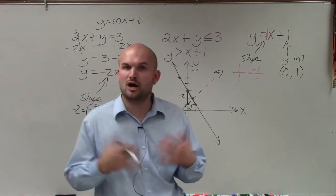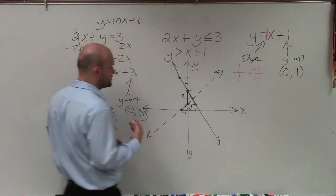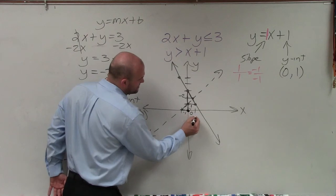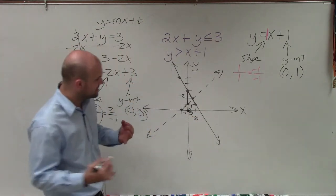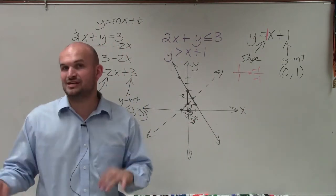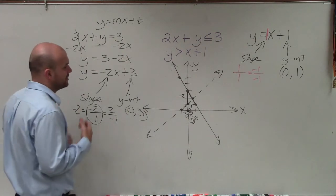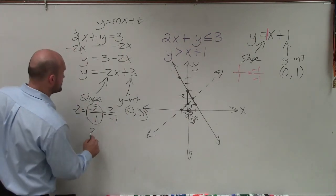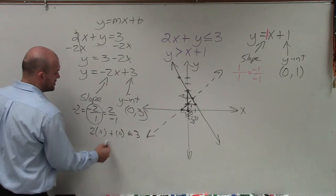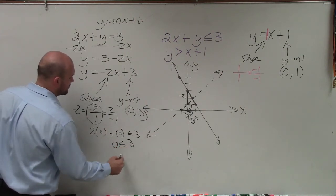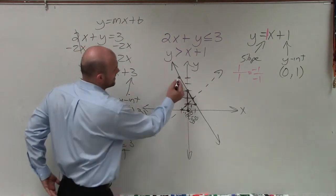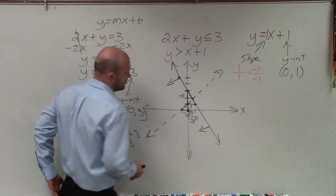The last thing we need to do is determine our test point, which will help us determine our shading. We want to choose a point not on either of the lines — (0, 0) is a great point to choose. We plug in 0 for x and 0 for y in both inequalities to determine if they're true or false. For the first inequality: 2 times 0 plus 0 is less than or equal to 3, which gives us 0 is less than or equal to 3 — that is true. So for the first graph, the test point is true, meaning we shade below that line.